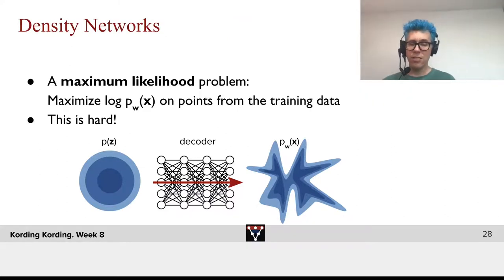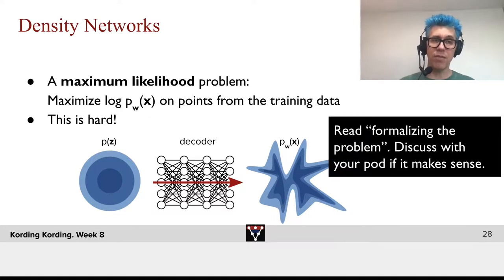This distribution we'd like to be good. So, we have effectively a maximum likelihood problem. We want to maximize the log probability on the points from the training data. We want this to be similar to the real distribution. This is, of course, hard.